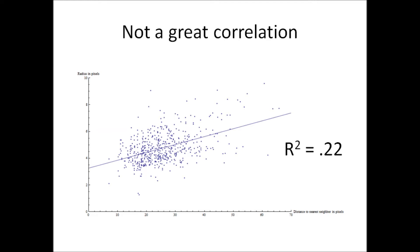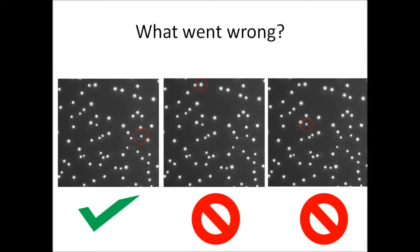Why is that? Well, if you look back at the image more closely, you can see that the nearest neighbor metric works out for some of the wires, like the one on the left, but not so well for the other cases.